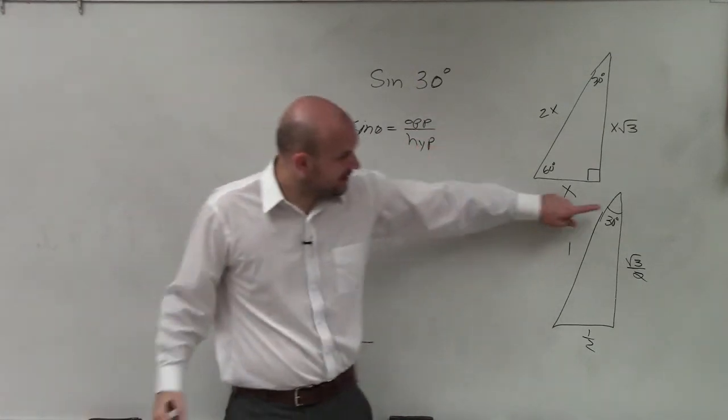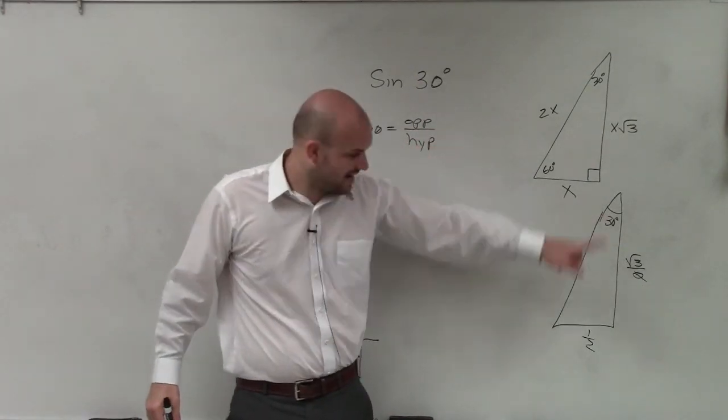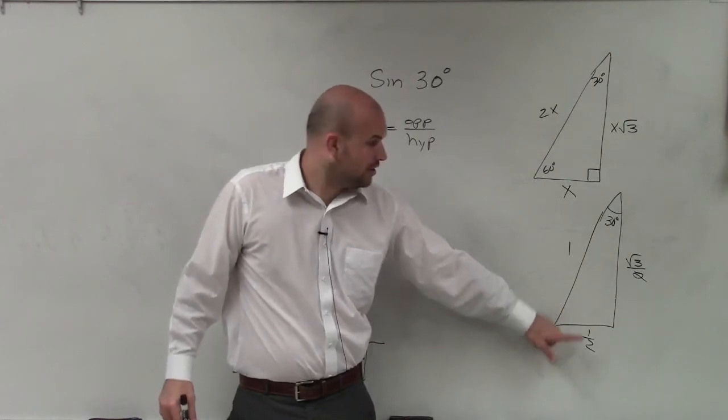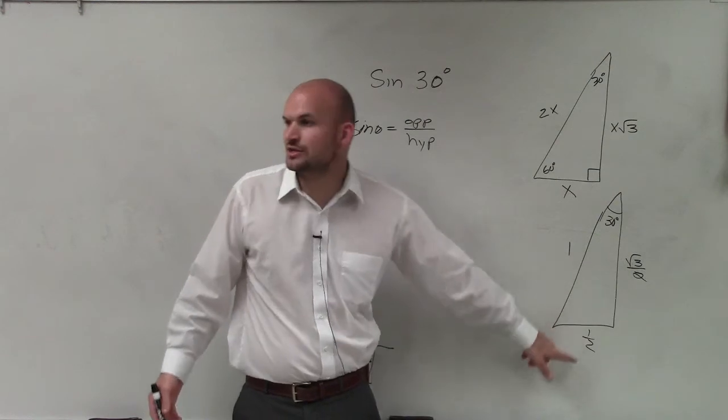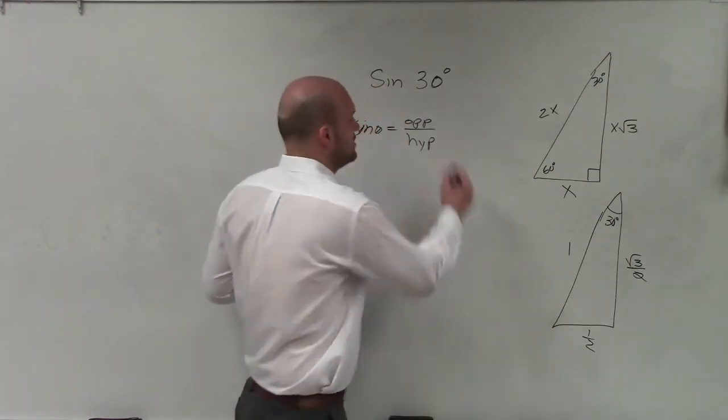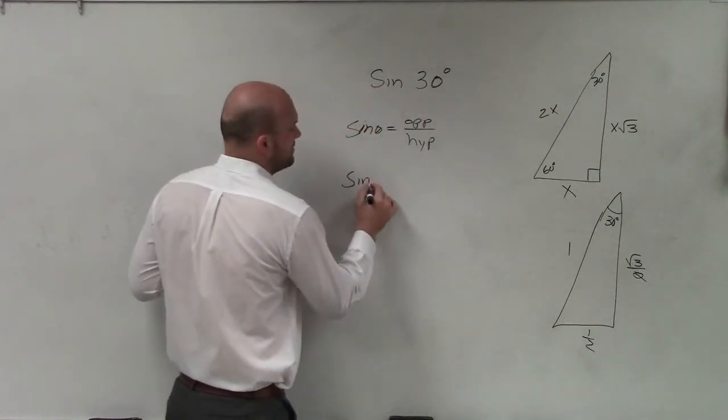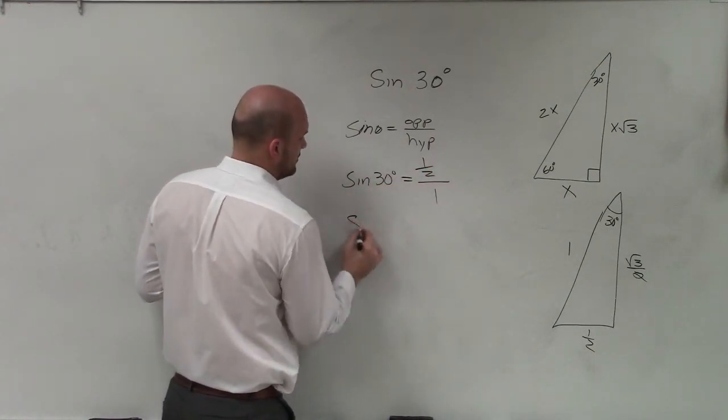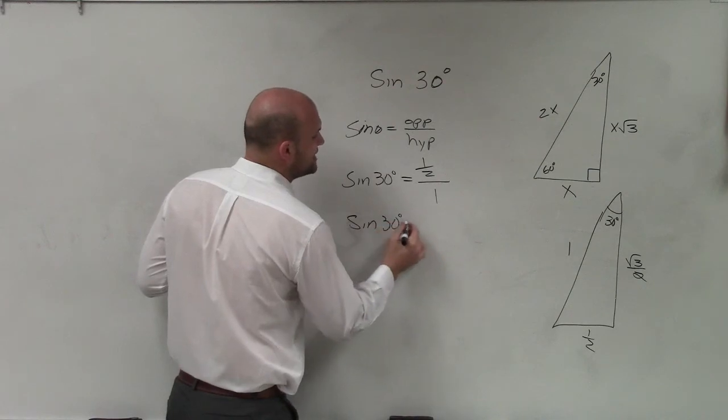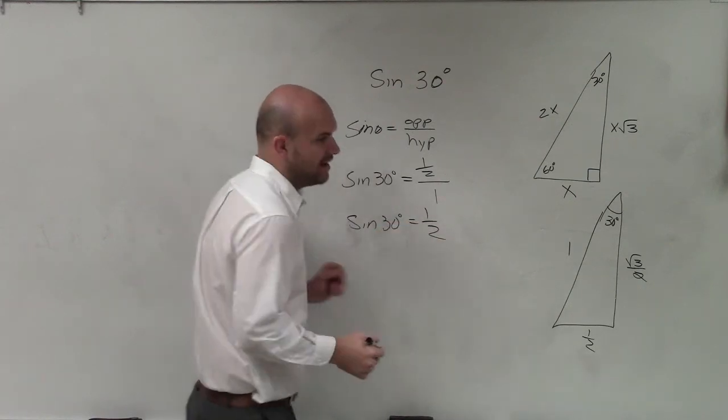So if I look at 30 degrees, the opposite side is 1 half over my hypotenuse, which is 1. Well, anything over 1 is just going to be that anything. So therefore, the sine of 30 degrees is equal to 1 half divided by 1. The sine of 30 degrees is just equal to 1 half.